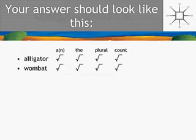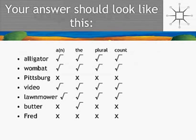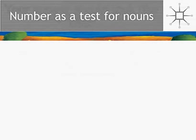Alligator and wombat are fine with all of them. Pittsburgh doesn't really work with any of those. Video and lawnmower are okay. But butter is only okay with 'the' — you can't really put 'a butter' in. 'Butters' — 'there were seven butters in the fridge' — only works if we're referring to blocks of butter. Fred is like Pittsburgh: it doesn't like any of them. So we have three patterns here. The number test turns out to be defective: when it works, you have a noun, but when it doesn't work, it doesn't mean you don't have a noun.